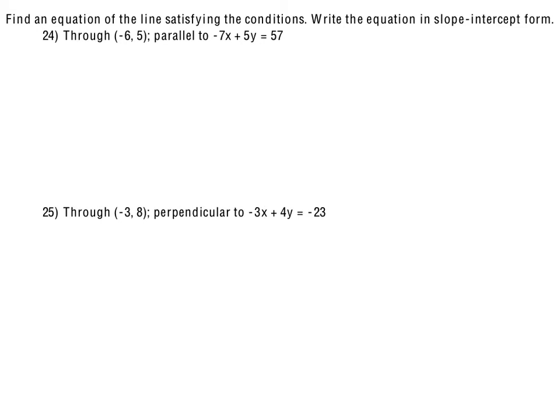Next problem we have is 24. It's similar to the last one, except now they want the equation in slope intercept form. And they tell us it goes through negative 6, 5, and it's parallel to negative 7x plus 5y equals 57. Again, if you know the trick for getting the slope out of the standard form, that's going to work great here. Slope would be a positive 7 over 5. You could also just rewrite that in slope intercept form to figure that out. At this point then, the slope for that line is 7 fifths. And I want to write an equation for a line that's parallel to that one. That would mean they would have the same slope.